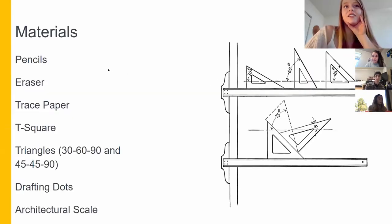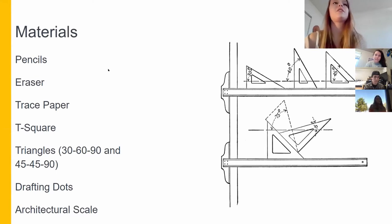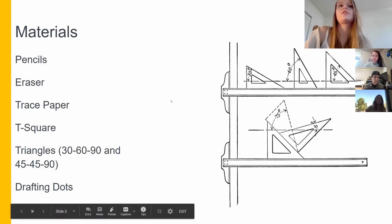Getting started, some of the materials you'll need are a pencil, an eraser, trace paper, a t-square, your triangles, both of them the 30-60-90, the 45-45-90, and then drafting dots and an architectural scale.